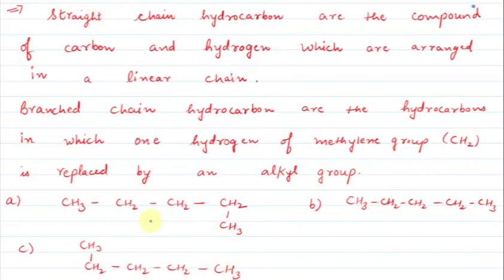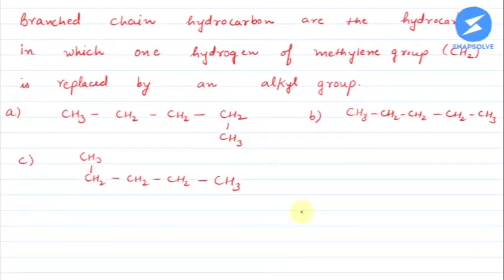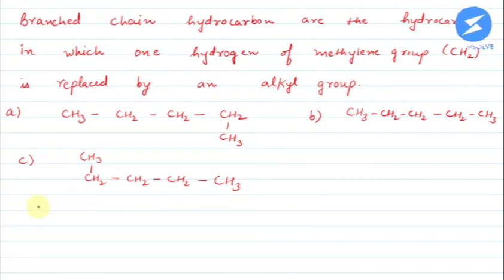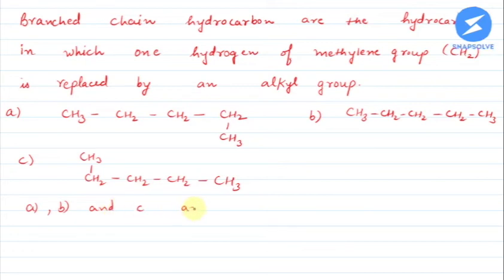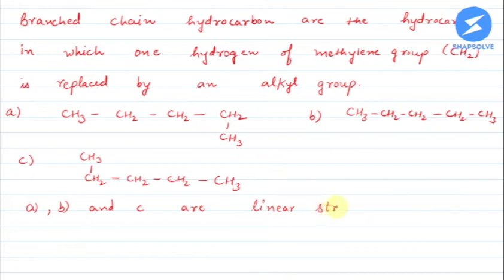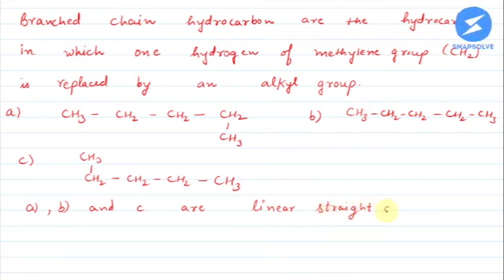So what are these three structures? There is no change in them — it is only a different representation of each other. A, B, and C are all linear straight chain hydrocarbons.